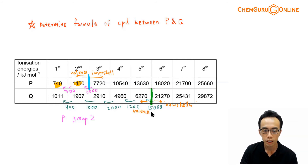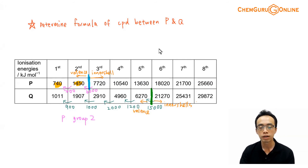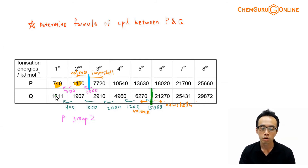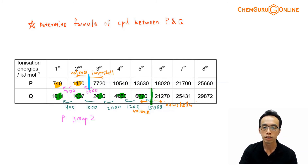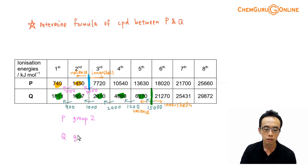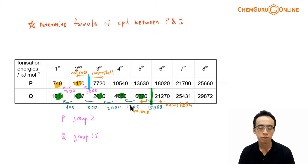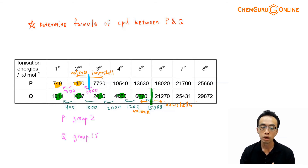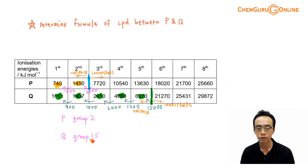Electron number five and all electrons to the left of the big jump are valence electrons. So how many valence electrons does Q have? One, two, three, four, five — five valence electrons. If Q has five valence electrons, this means element Q is in group 15. If it is in group 15, this is a non-metal. So P is a group 2 metal and Q is a group 15 non-metal.